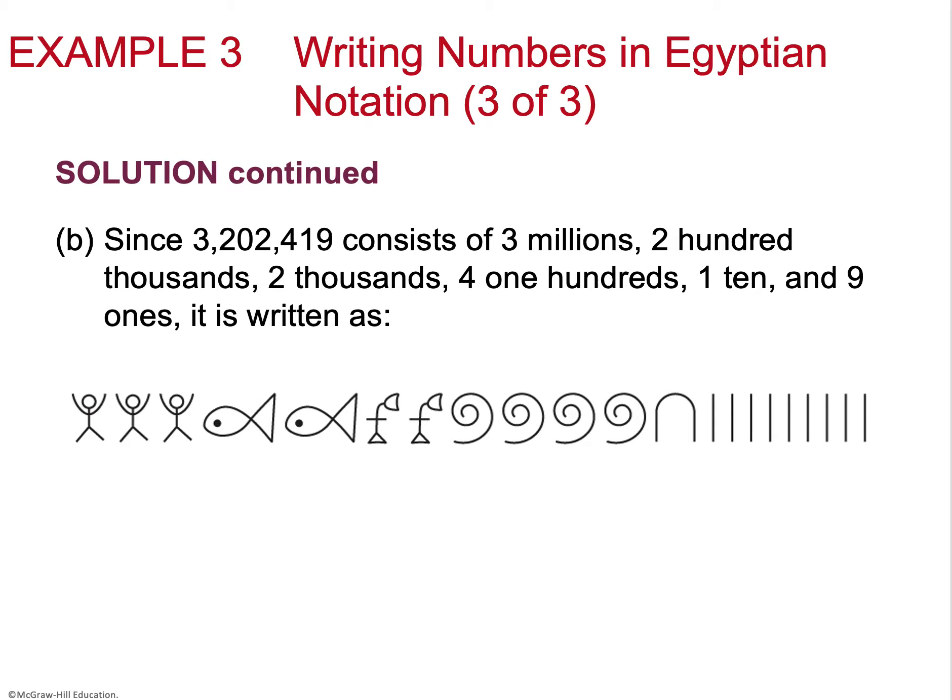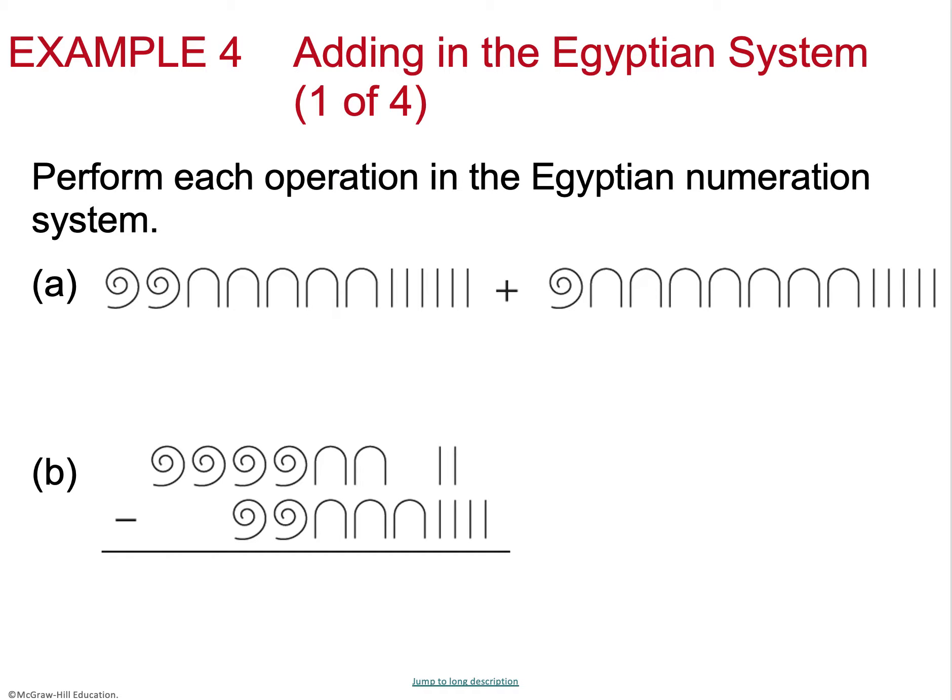For 202,419, I write it out in expanded form — noting 3 in the millions place, 2 in the 100,000s place, and so on — then match each digit to the corresponding Egyptian symbol. Understanding place value is essential here, and this activity really builds that skill.